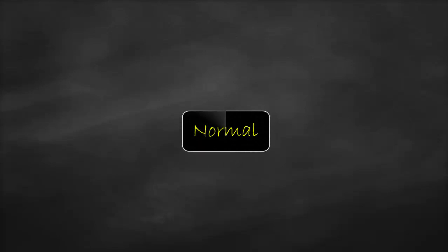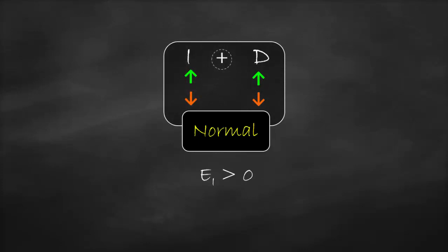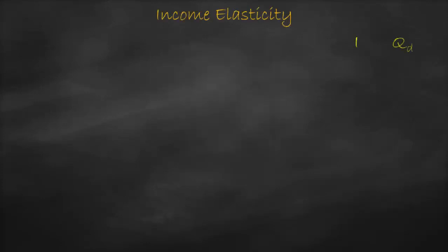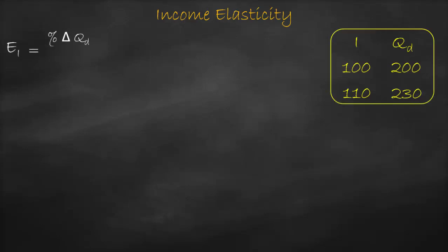We know that a good will be a normal good if we have a positive relationship between income and demand — income and demand move in the same direction. Consequently, income elasticity will be bigger than zero. Also, if income elasticity is bigger than one, this good will be luxurious. Let's get some numerical examples about a normal luxurious good. If income is 100 and quantity demanded is 200, and income increases to 110, quantity demanded will be 230.